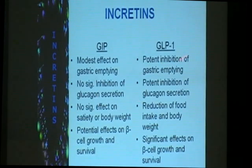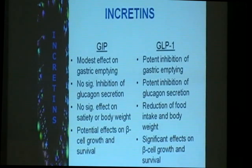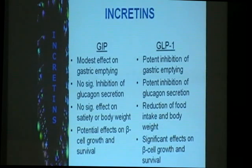Predominantly GLP-1 has significant effects on beta cell growth and survival, so it can cause beta cell differentiation. That is something we need to look at in the long term, because it might be an important component in improving beta cell function. The manufacturers of the new drugs are not yet ready to claim that they can prevent or delay worsening of beta cell function — that is still being studied.